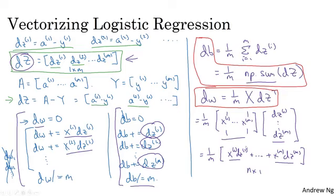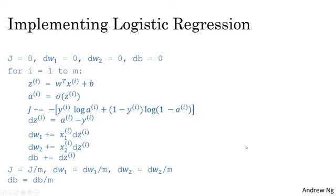So now, let's put it all together into how you would actually implement logistic regression. This is our original highly inefficient non-vectorized implementation. Where the first thing we've done in the previous video was get rid of this for loop. So instead of looping over dw1, dw2, and so on, we have replaced this with a vector value dw. And we just say dw plus equals xi, which is now a vector, times dzi.